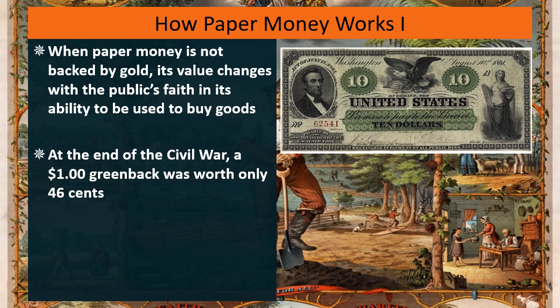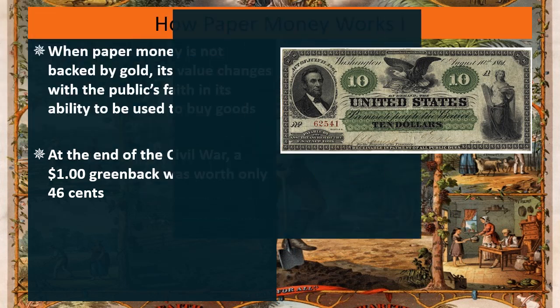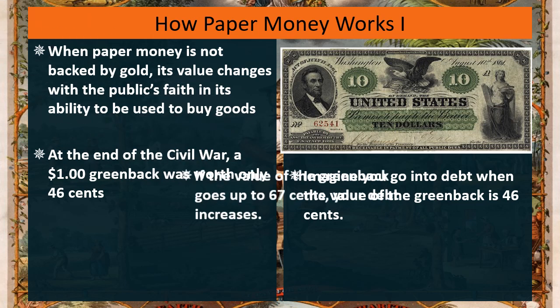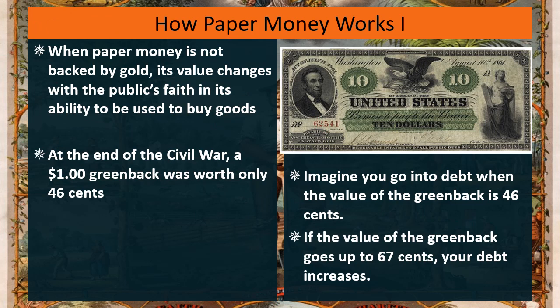So when you look at these greenbacks issued in the Civil War, by the end of the war they're not going to be worth as much. Let's imagine that you go into debt when the value of a greenback is 46 cents — you've taken this dollar greenback but only gotten 46 cents worth of stuff. If the value of the greenback increases, your debt has increased, but the amount of goods you got has not.